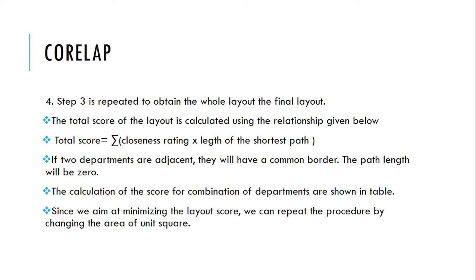Step 3 is repeated to obtain the whole layout. After the final layout is obtained, we calculate the total score of the layout. The formula for calculating the CORELAP score is: summation of closeness rating multiplied by the length of the shortest path between departments. If two departments are adjacent, they share a common border so the path length is zero.